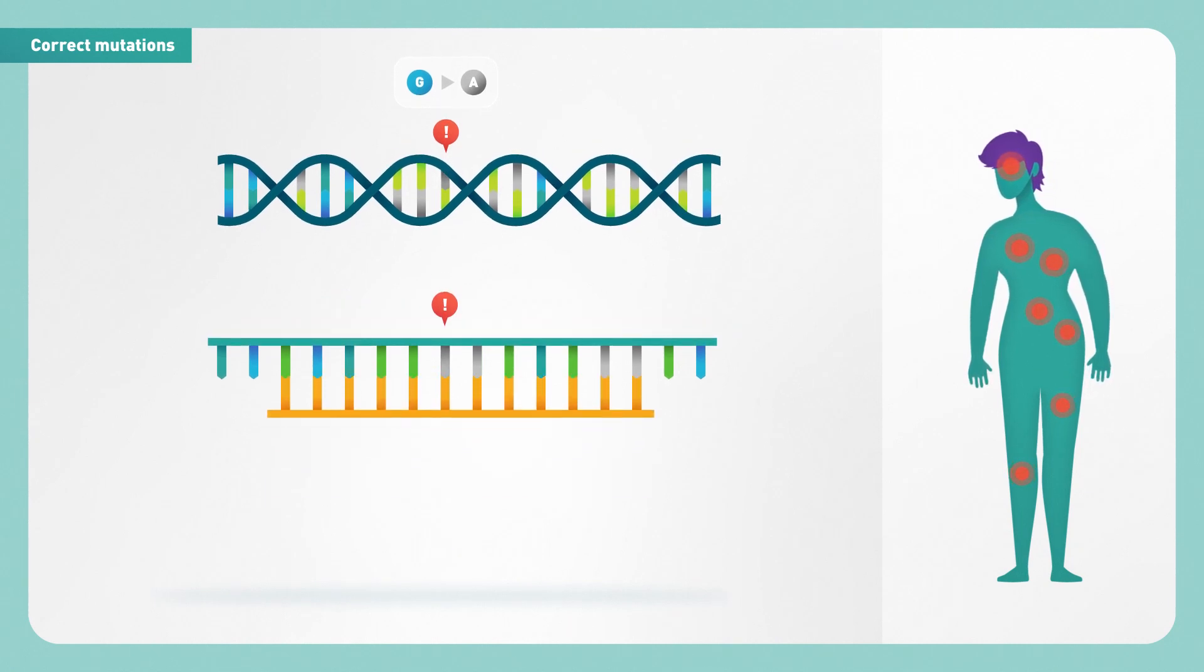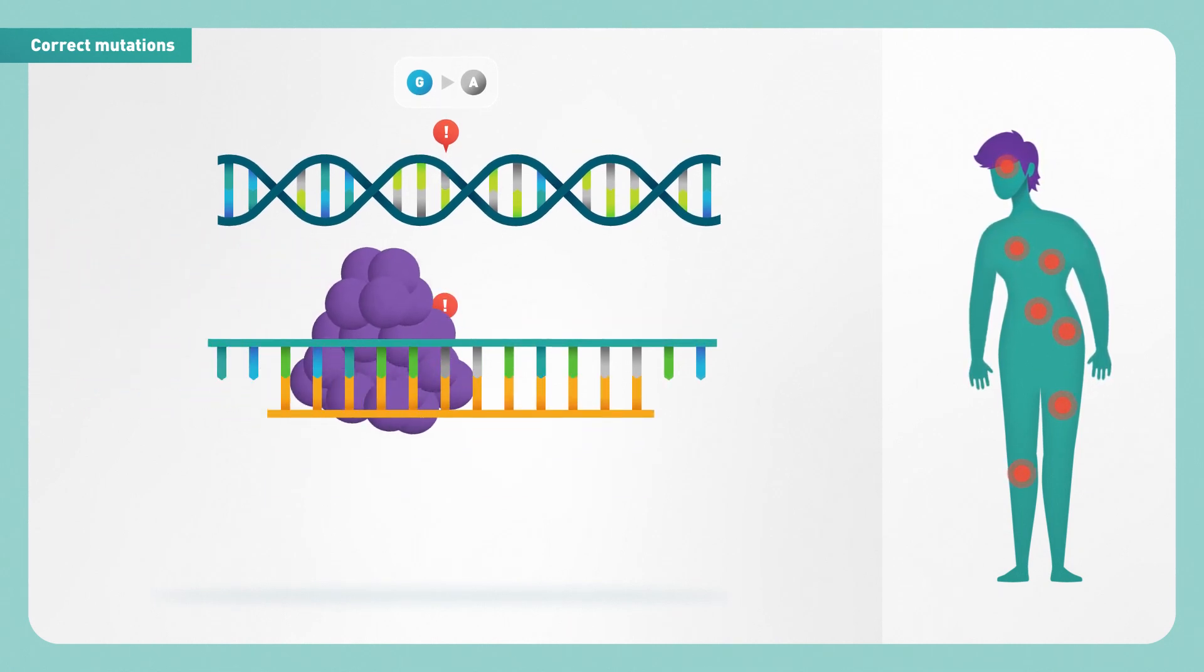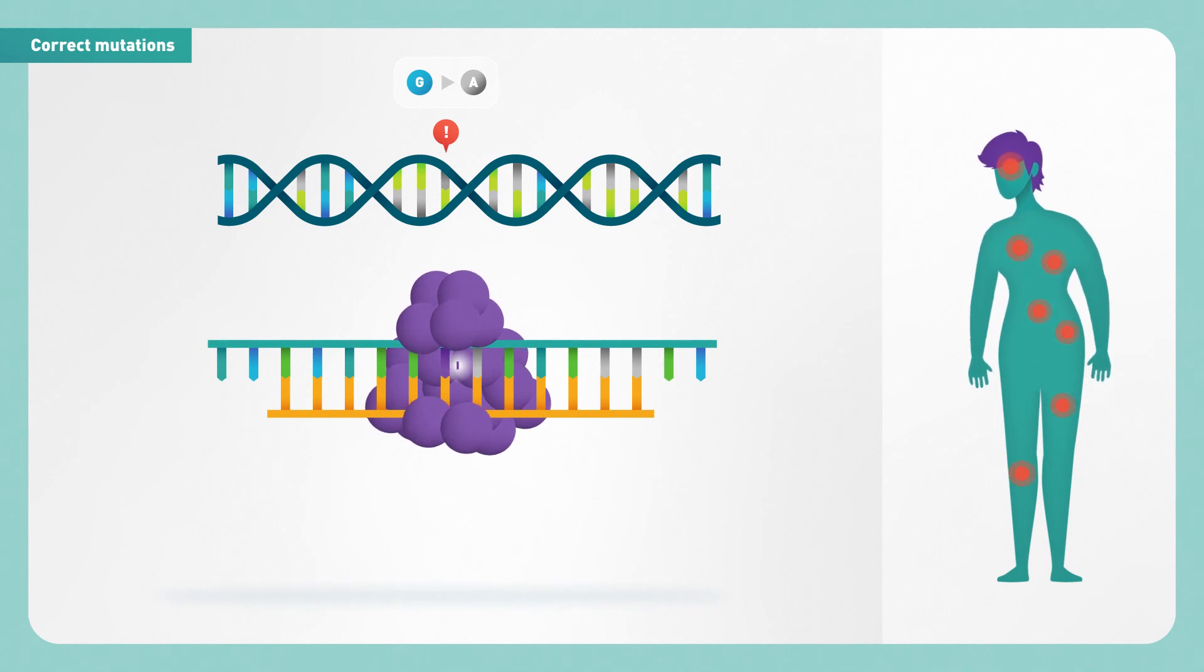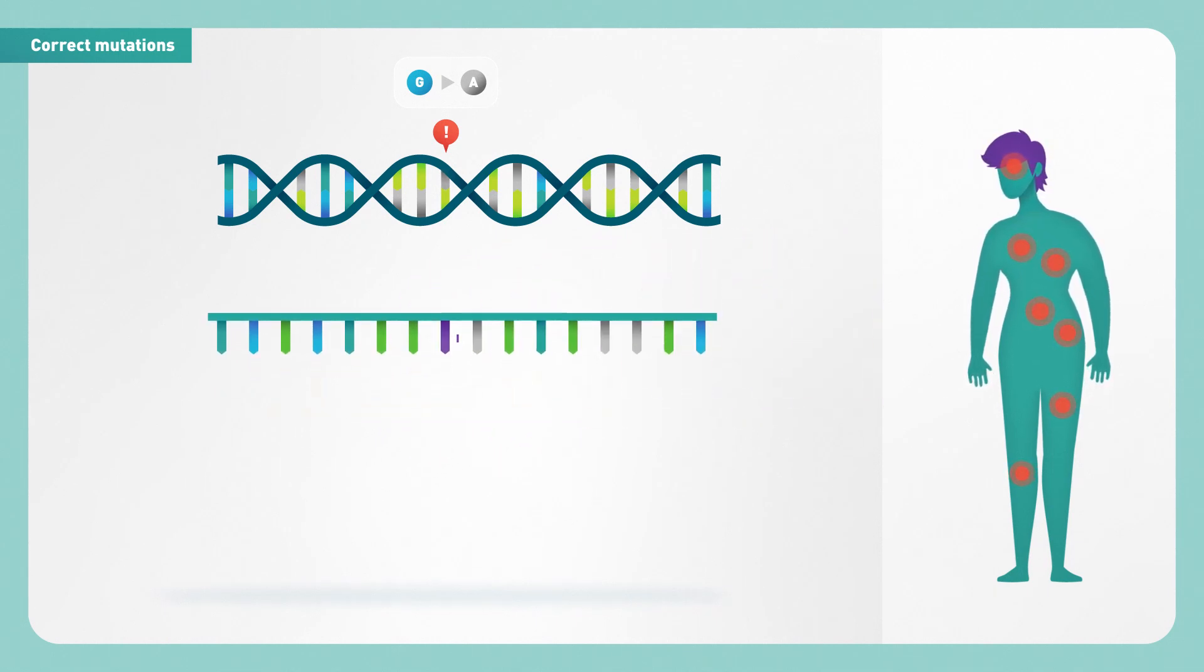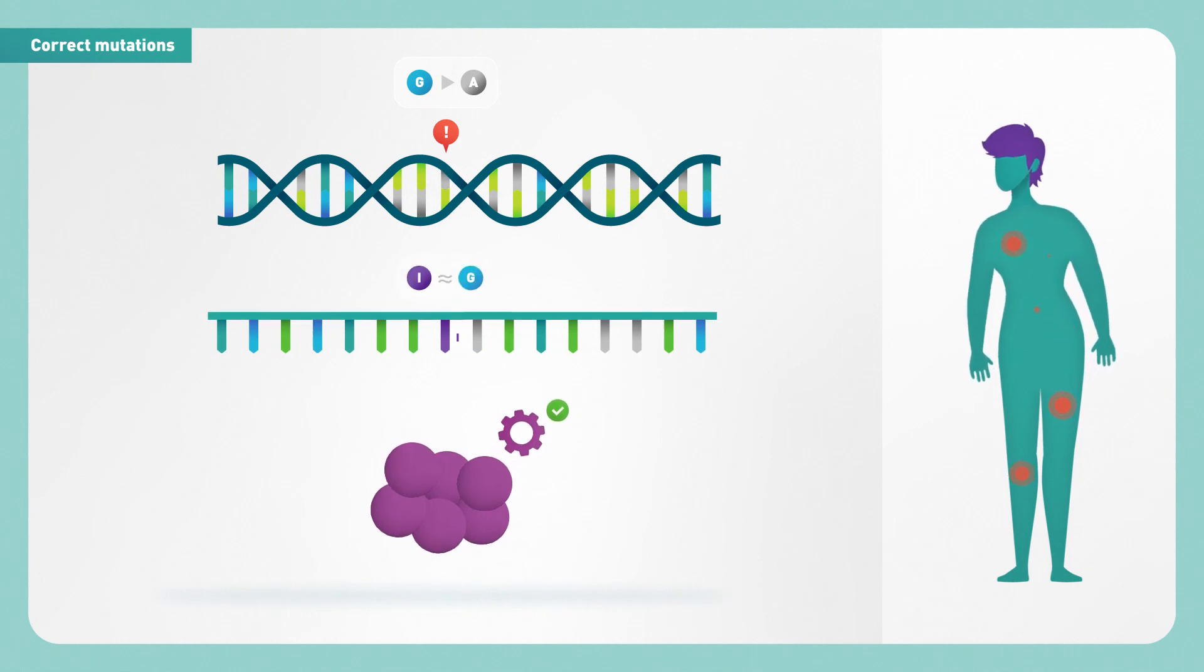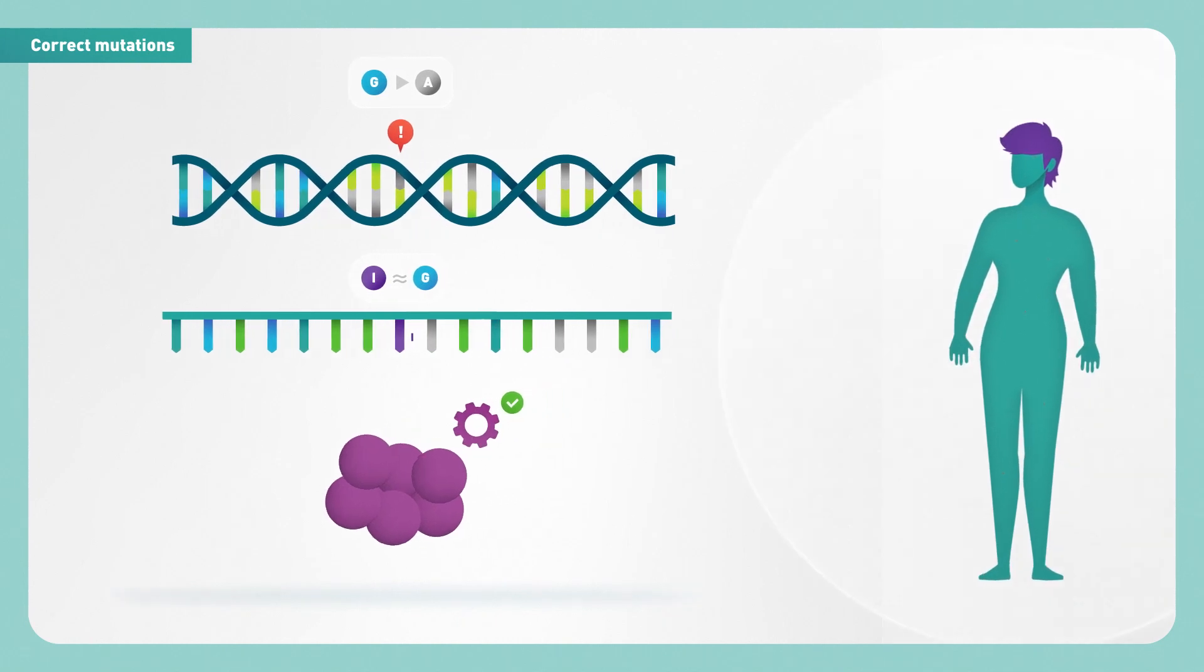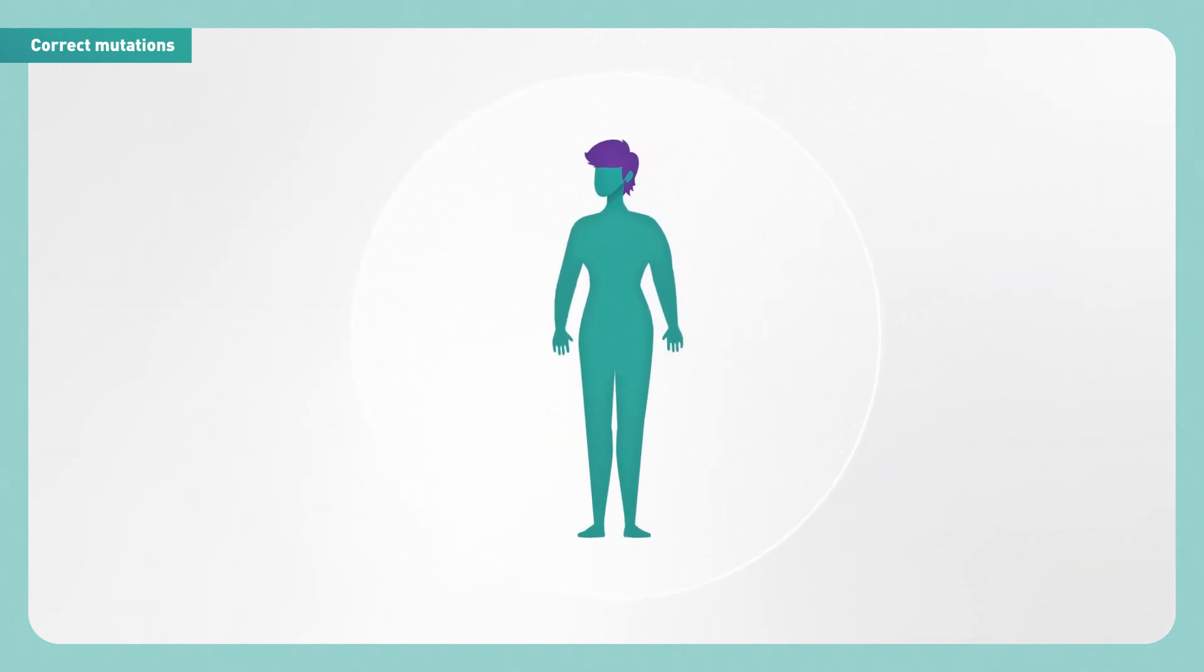Axiomer EONs can address this mutation by recruiting ADAR to perform an A-to-I editing at the RNA level. When the RNA is then used to make a protein, the I is read as a G, which reverses the G to A mutation. This is how the Axiomer technology has the potential to prevent, alleviate, or reverse disease progression, without making permanent changes to the DNA.